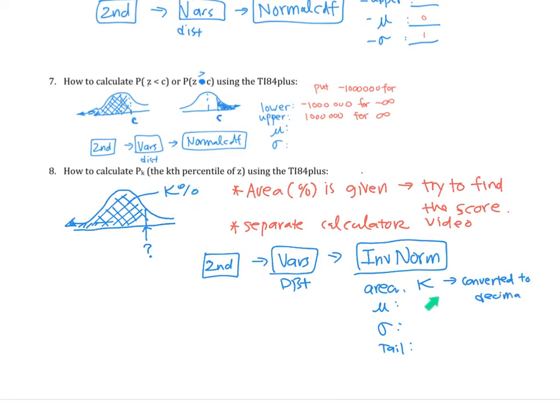In this case we'll put k converted to decimal. For example, if it's 70 percent then I'm going to convert it into 0.70. If it's 15 percent then it'll be 0.15, and so on. Mu is the mean, sigma is the standard deviation.